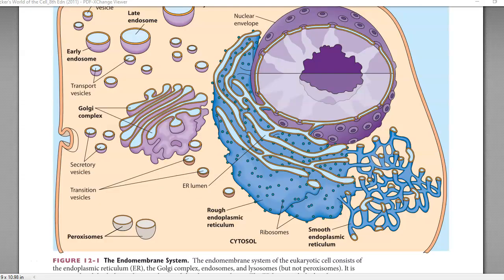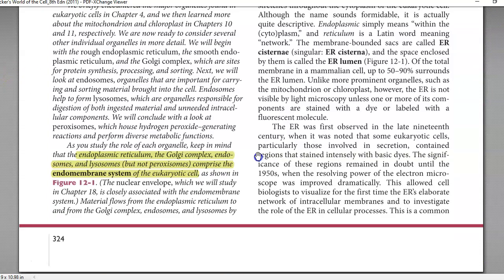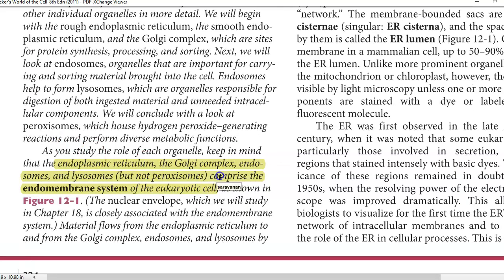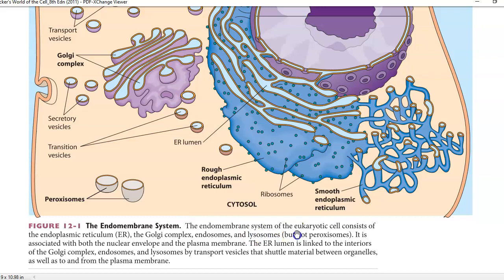Before going into the details of the endoplasmic reticulum and other organelles, we will look at some basic points related to what is an endomembrane system. The endomembrane system is commonly present in eukaryotic cells. It is composed of endoplasmic reticulum, the Golgi complex, endosomes, and lysosomes — but not peroxisomes. Omitting peroxisomes, all other components are continuously present in a eukaryotic cell and are referred to as the endomembrane system.